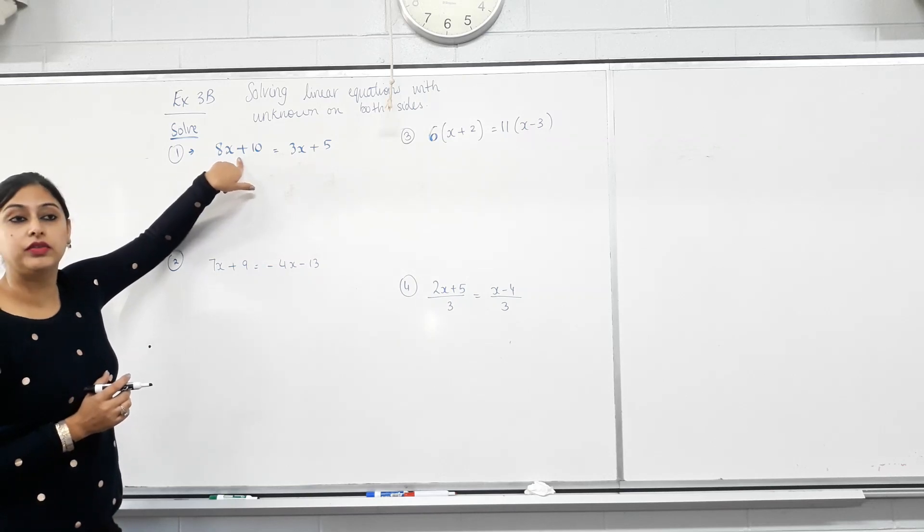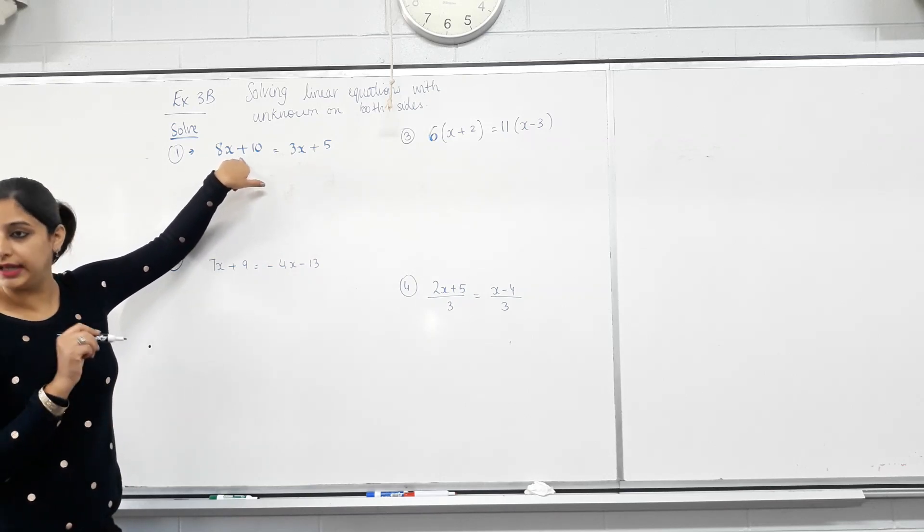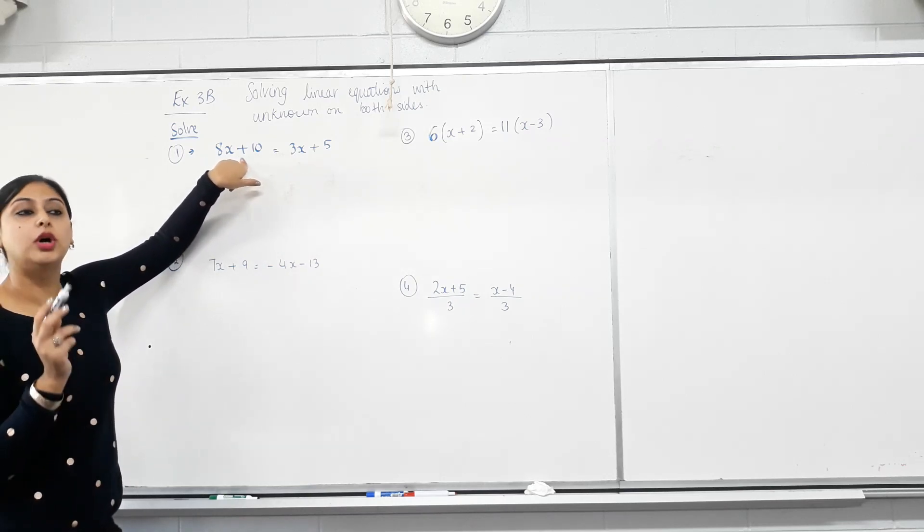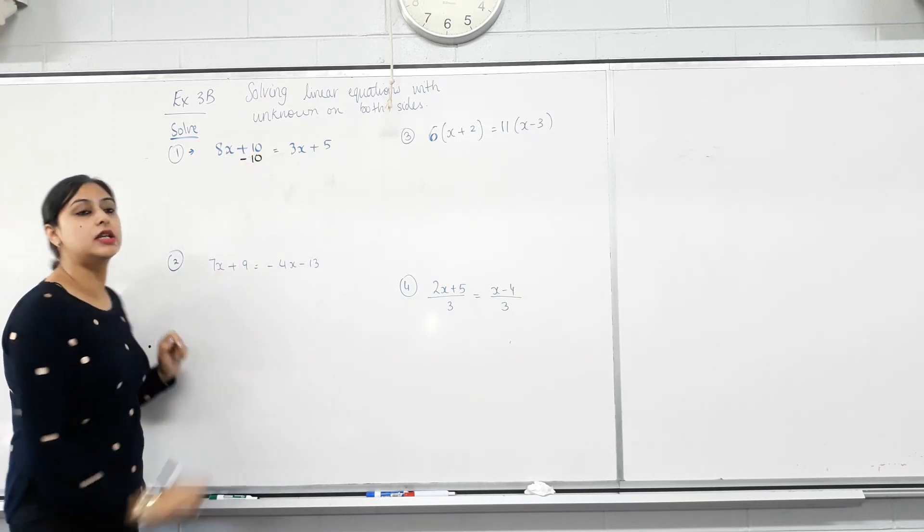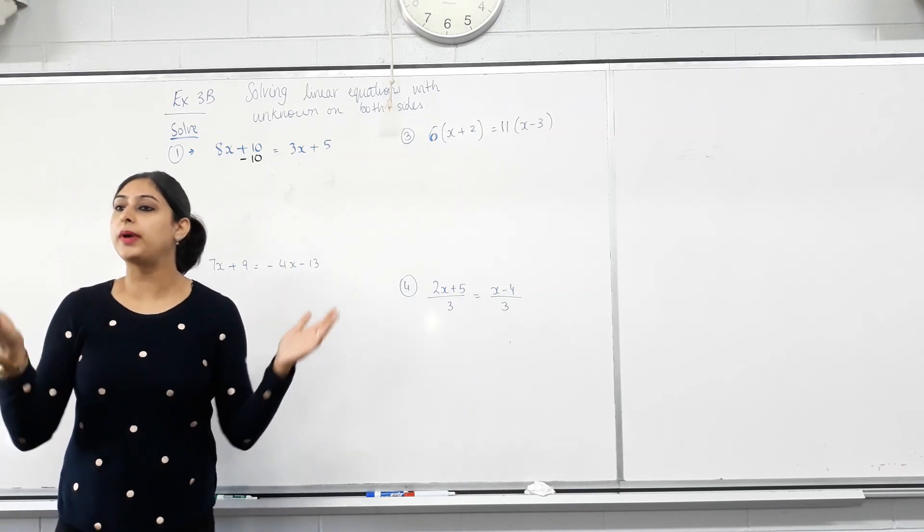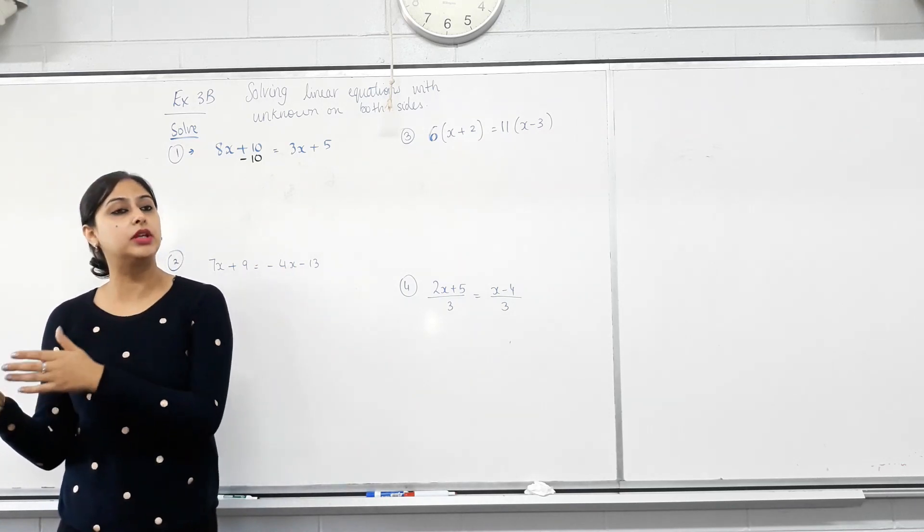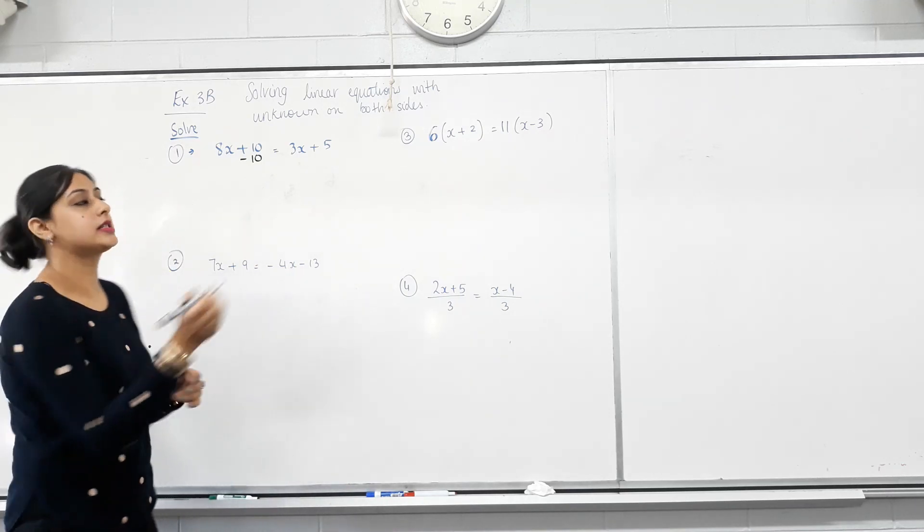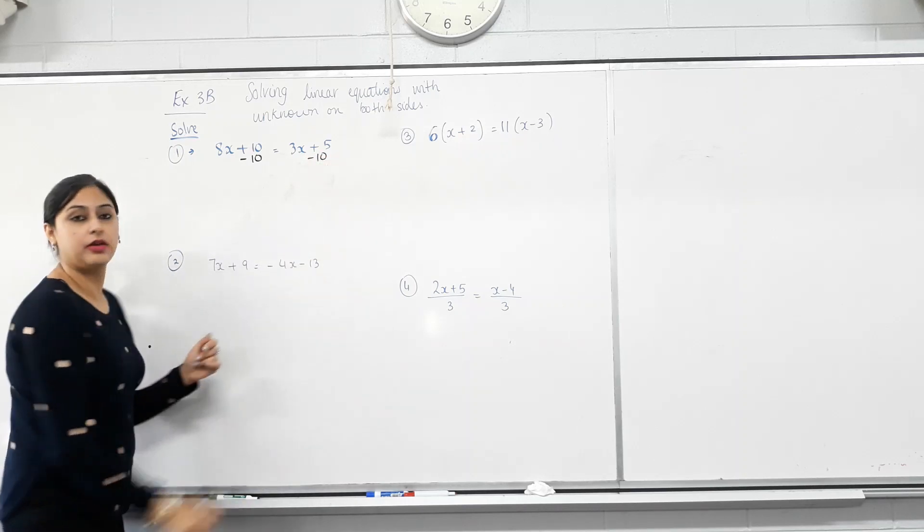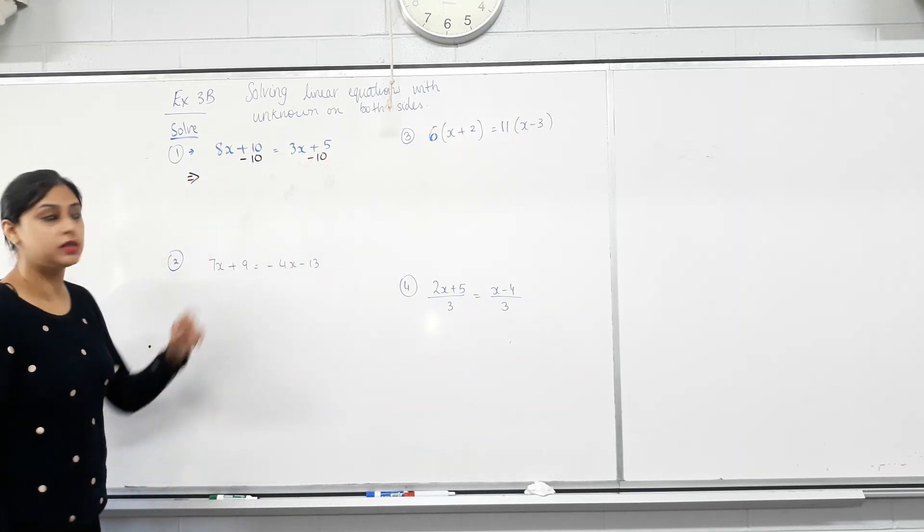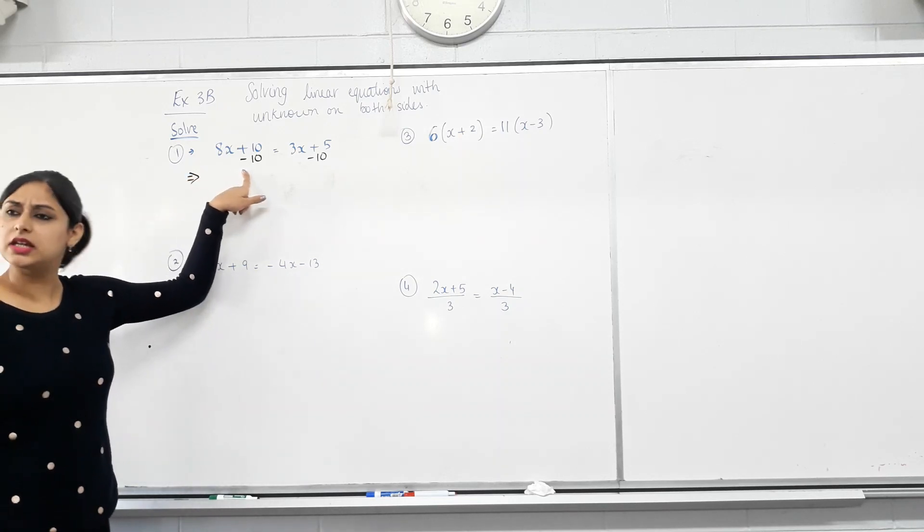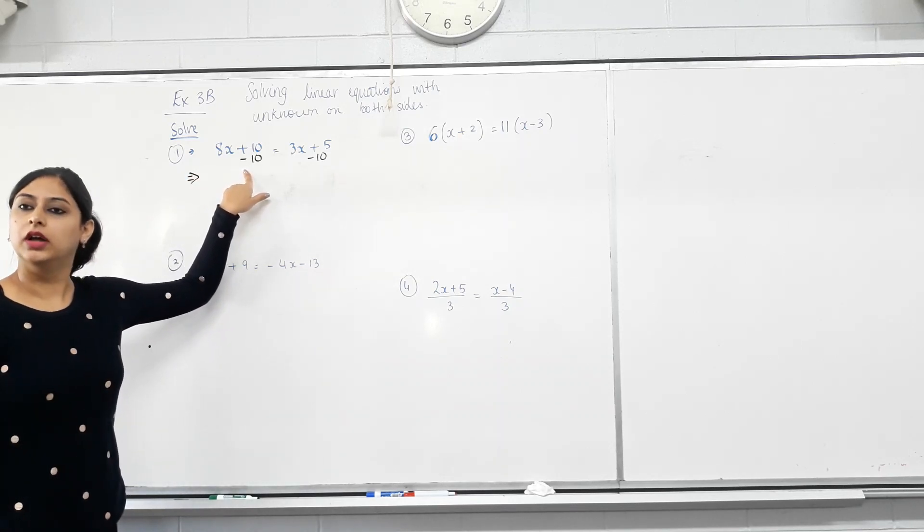So I need to get rid of this 10 here. Is this 10 being added? Yes. What's the opposite of adding 10? Subtract. So if I minus 10 from this side, it's an equation. It's not balanced anymore. Do I have to do the same thing to the other side? Yes. Is that right? Yes. Then this side supplies 8x minus 10. Can I take away 10 from 8x?